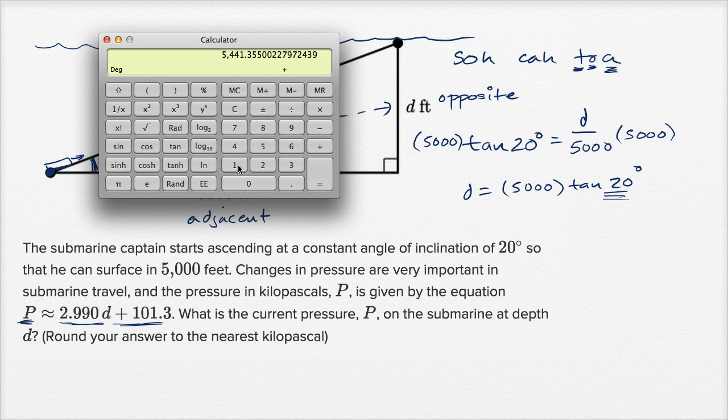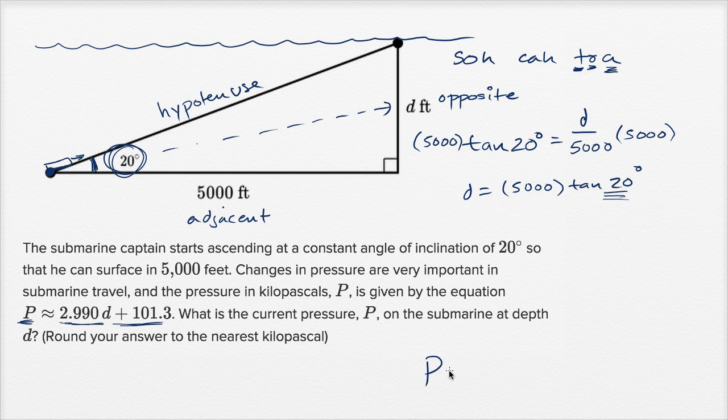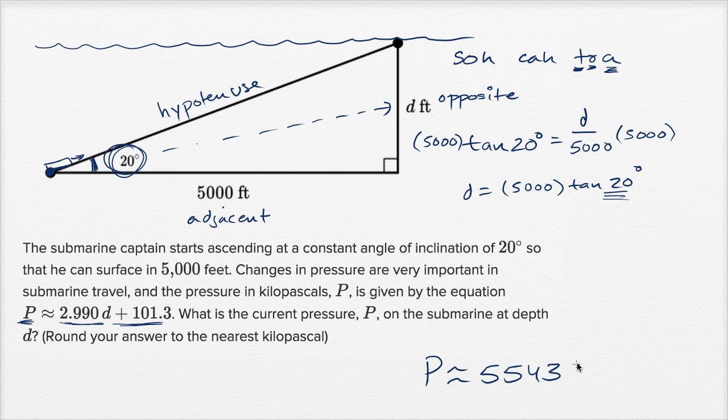So plus 101.3 is equal to 5,542.653. And let's see, I want to round to the nearest kilopascal. This P here is given in kilopascals. So it's going to be 5,540, I'm going to round up because I have a .6 here, 5,543. So P is approximately 5,543 kilopascals.